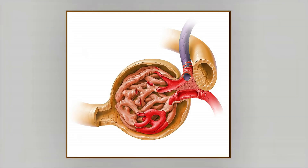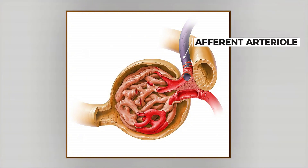The blood vessel that brings blood into the glomerulus is called the afferent arteriole, and the one that takes blood away is called the efferent arteriole.